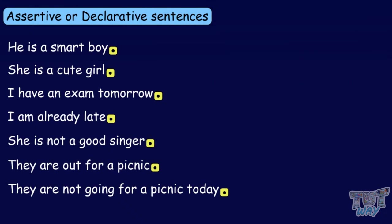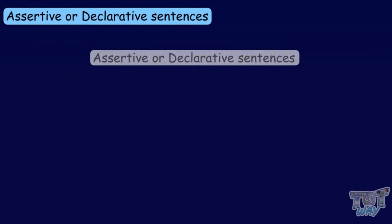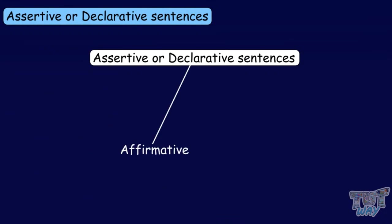All these sentences make some statement about something or someone, and so they are called declarative or assertive sentences — they are telling about someone or something. Declarative or assertive sentences can further be divided into two types: they can be affirmative or negative.